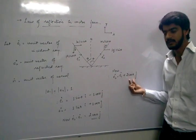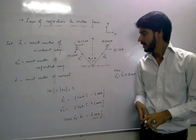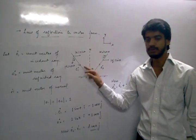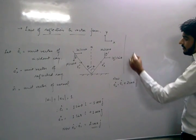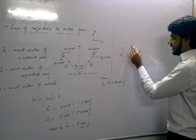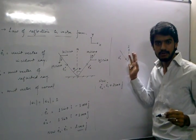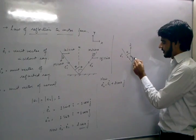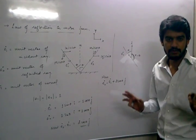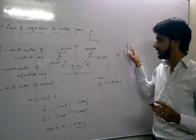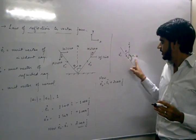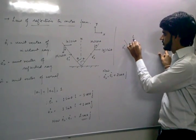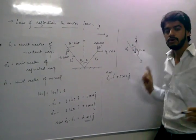But we can also find the value of cos theta. For that, we will find the dot product of unit vector E1 and unit vector N. Unit vector E1 is in this direction, while the normal is in the upper direction. So the angle between the two is not theta but pi minus theta — the angle between unit vector E1 and unit vector N is pi minus theta. Both rays should be outward at the point of intersection: E1 is outward and N is also outward.